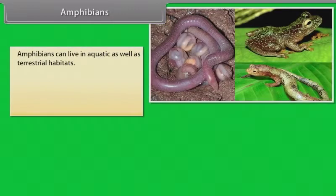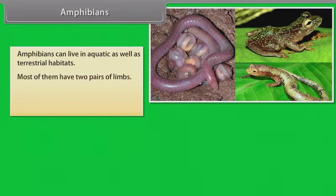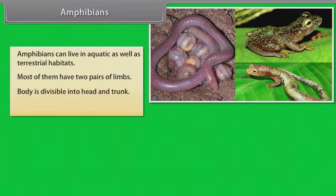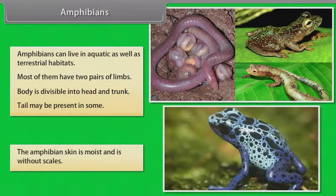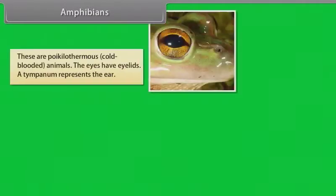Amphibians. Amphibians can live in aquatic as well as terrestrial habitats. Most of them have two pairs of limbs. Body is divisible into head and trunk. Tail may be present in some. The amphibian skin is moist and is without scales. These are poikilothermous, that is, cold-blooded animals.